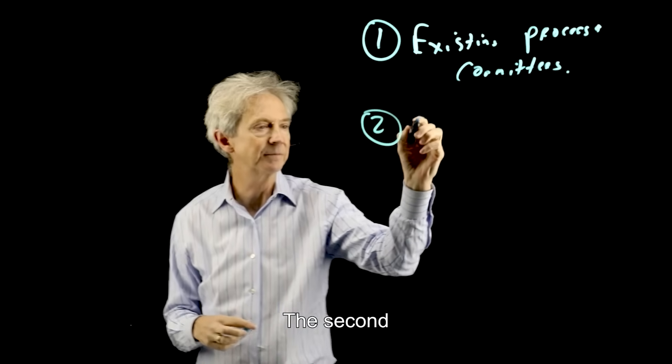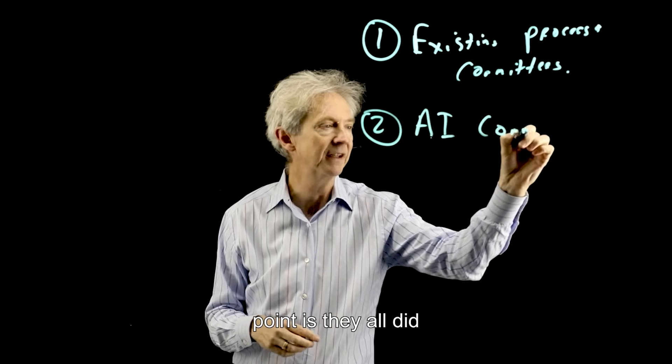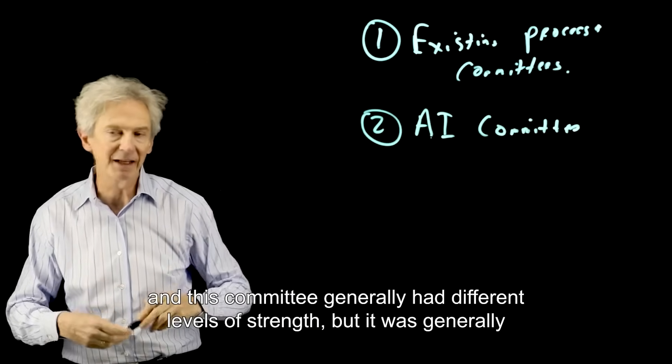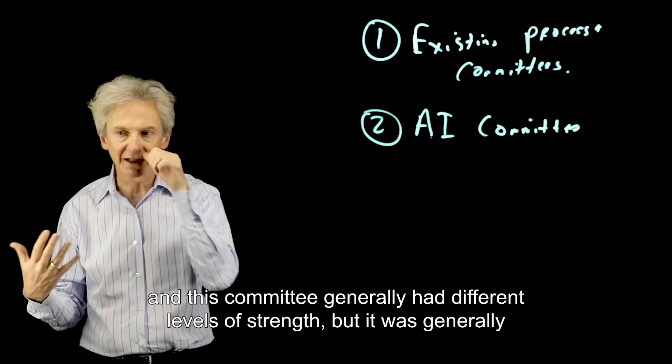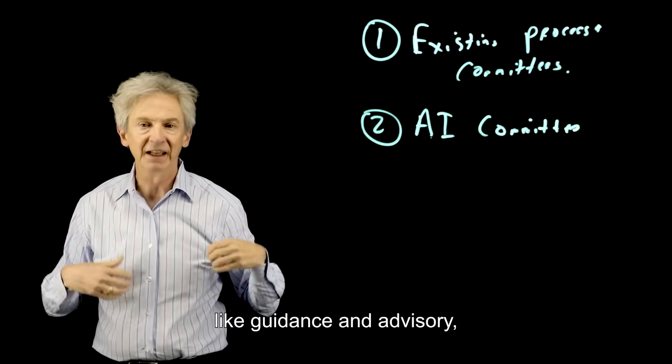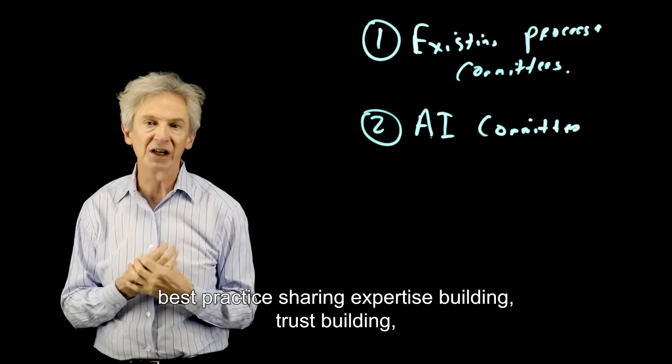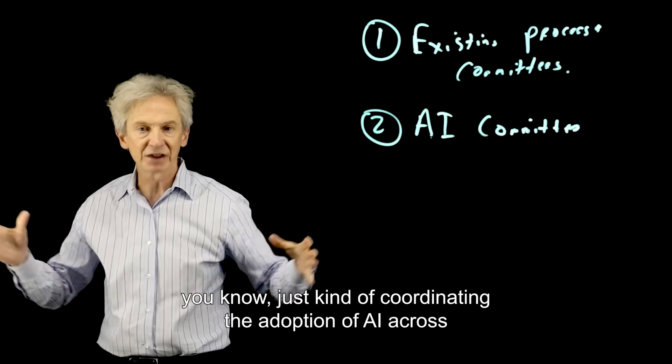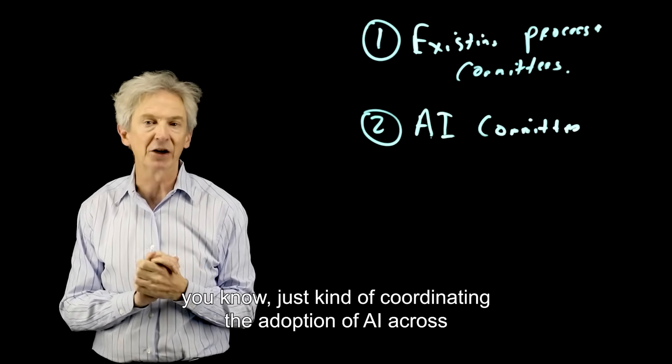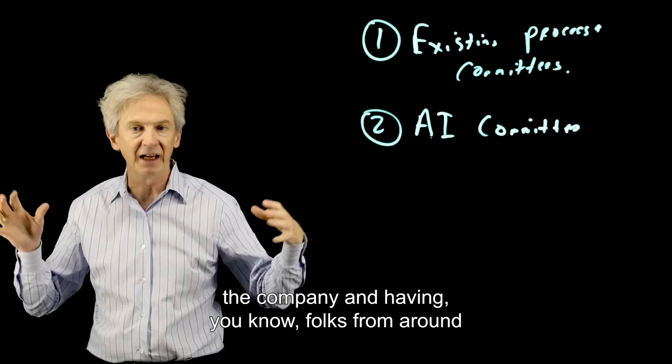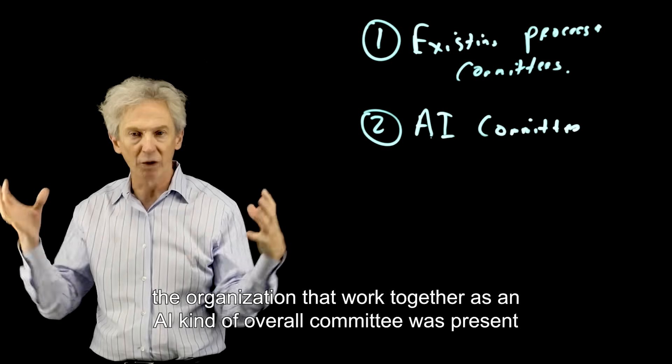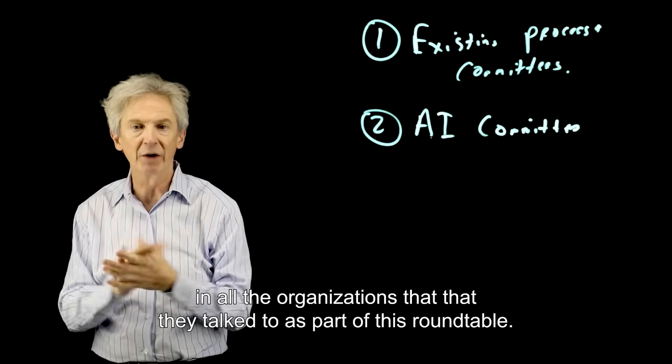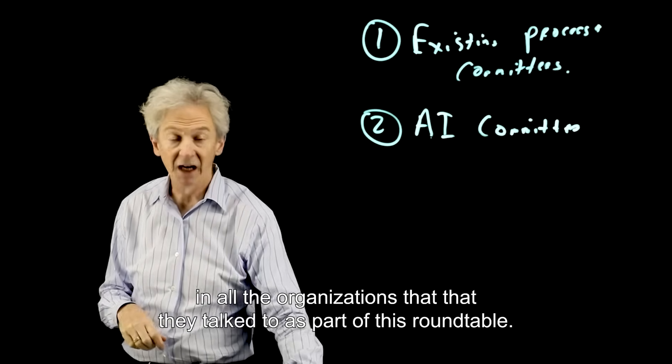The second point is they all did, perhaps in contrast to what I just said, they all had an AI committee. And this committee generally had different levels of strength, but it was generally like guidance, advisory, best practice sharing, expertise building, trust building, just kind of coordinating the adoption of AI across the company and having folks from around the organization that work together as an AI kind of overall committee was present in all the organizations that I talked to as part of this roundtable.